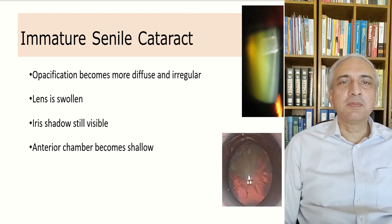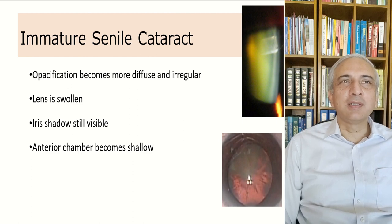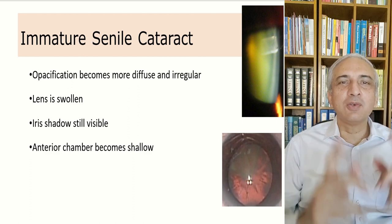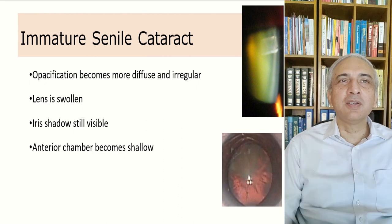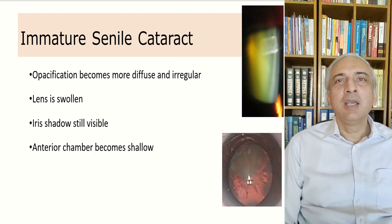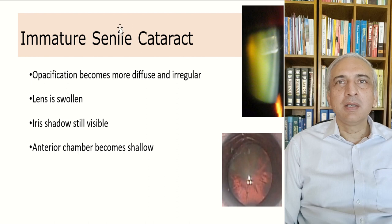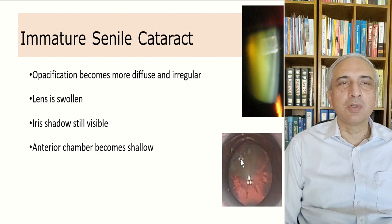In the immature senile cataract stage, the opacifications become more diffuse and irregular. The lens is swollen, the iris shadow is still visible, and the anterior chamber becomes shallow. At this stage, there can be either nuclear sclerosis or cortical opacities becoming more diffuse.